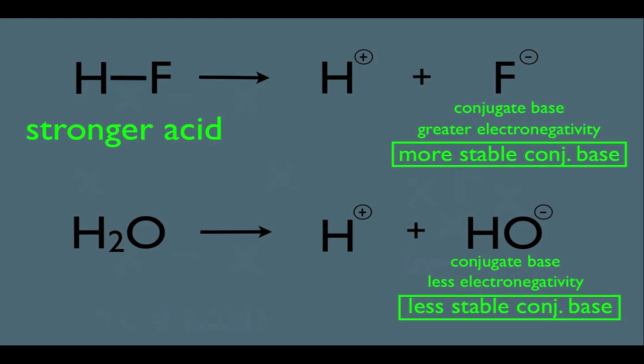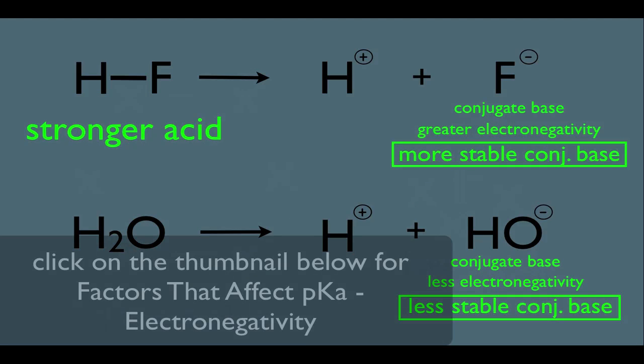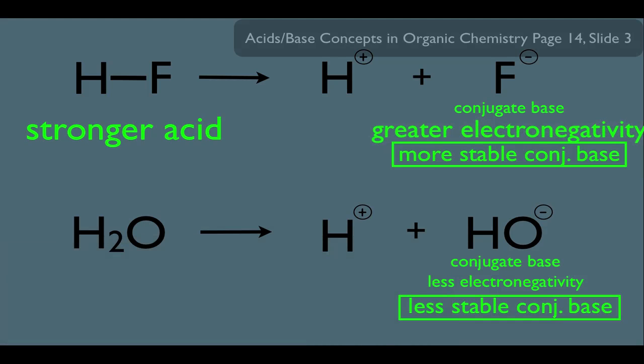We saw in a previous online lecture that HF was a stronger acid than H2O, and that's because the F- has greater electronegativity and O- has less electronegativity. So it begs the question, on an exam, what should I use, electronegativity or size?